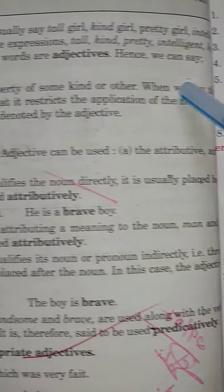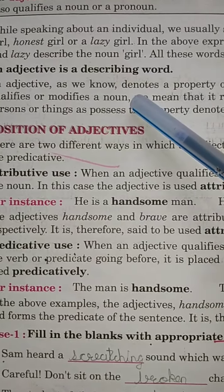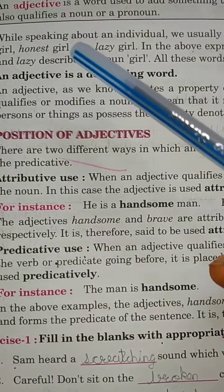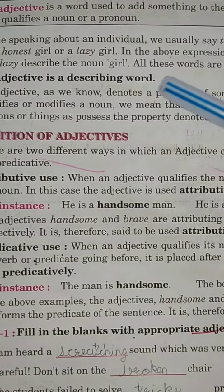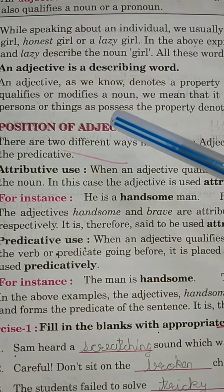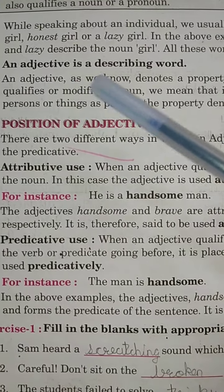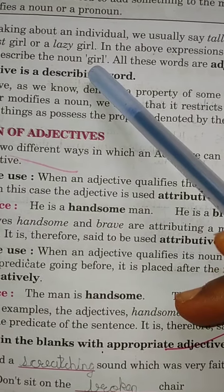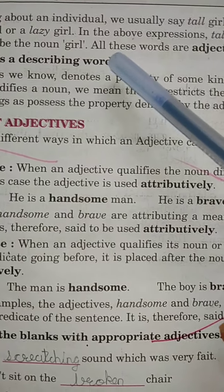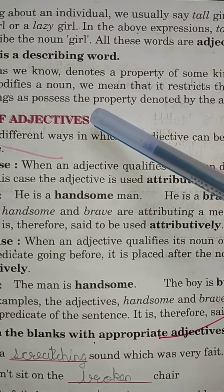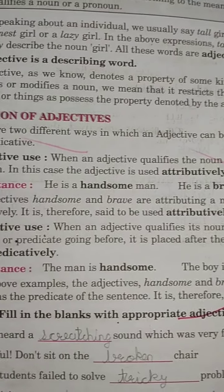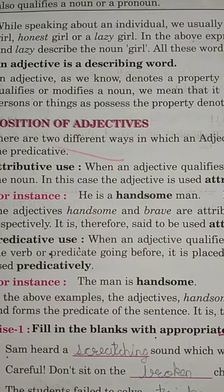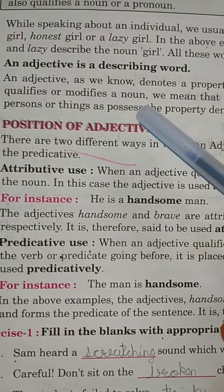Hence we can say an adjective is a describing word. Isko 'describing word' isliye bolte hain kyunki yeh noun ko describe karta hai. Like, noun ek hi hai — 'girl', toh lazy, short, tall, white, black — yeh sab adjective hain jo describe kar rahe hain noun ko. Similarly, 'book' hai toh book thin hai ya thick hai — thin aur thick bhi describing words ban gaye.